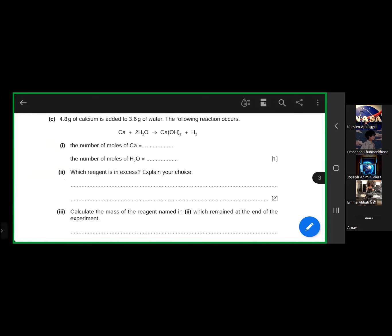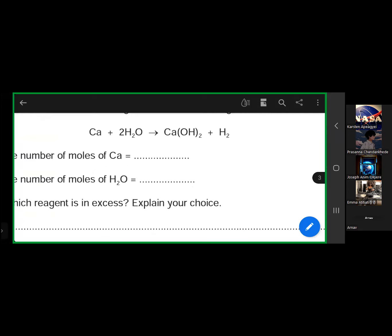Is it this one? Yes, ii. Calculate the mass of the reagent's name in ii which remains at the end of the experiment. So that means we need to find which reagent is in excess. Let me use this opportunity to explain excess reactants and limiting reagents. We have 4.8 grams of calcium added to 3.6 grams of water. The following reaction occurs: Ca + 2H₂O → Ca(OH)₂ + H₂.